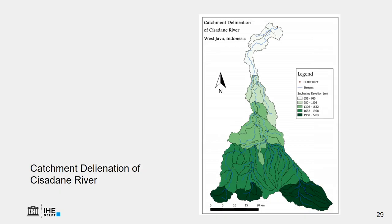Here we see another map. It has a good title, a north arrow, the water is blue, the outlet is clear, and it has a clear scale bar. It has something like 'subbasin elevation' — there is a typo — and it says 'in meters'. So it might be that the person calculated elevation per subbasin, which is a reasonable interpretation.